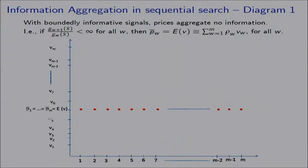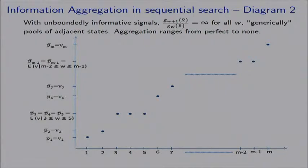With unboundedly informative signals you can also get the situation where in some states information is fully aggregated and in other states prices are completely pooled with adjacent states. This is just a typical picture of what it might look like. So this is the result for sequential search.